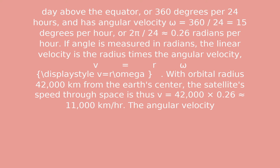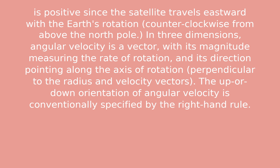The angular velocity is positive since the satellite travels eastward with the Earth's rotation. In three dimensions, angular velocity is a vector, with its magnitude measuring the rate of rotation and its direction pointing along the axis of rotation. The orientation of angular velocity is conventionally specified by the right-hand rule.